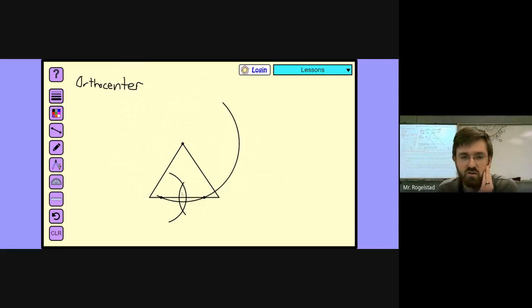Now, what I'm going to do is draw a line from the vertex through where the arcs intersect, so that it goes straight through. This is one of the altitudes.